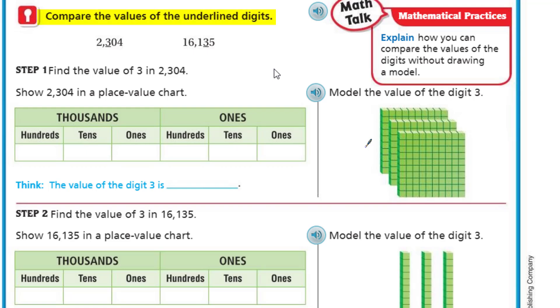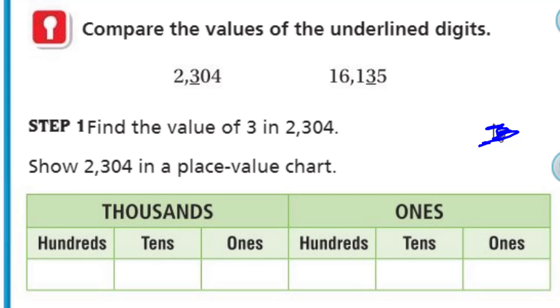Now it says compare the values of the underlying digits. We have 2,304. I see that the three is underlined right here. We have another three that's underlined over here. It says find the value of three in 2,304. Let's write it in our place value chart.